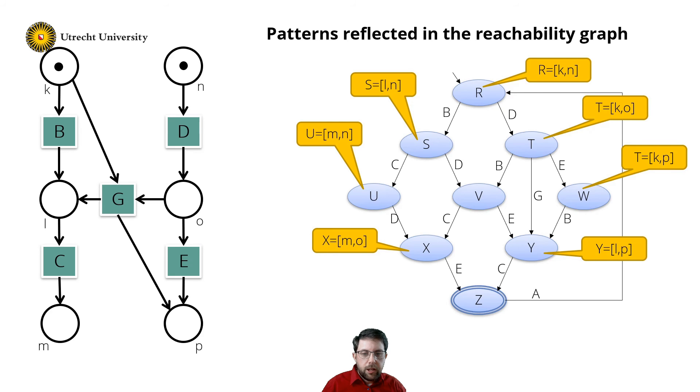So now transition G removes the tokens from places K and O, state T. And adds tokens to places L and P, state Y.